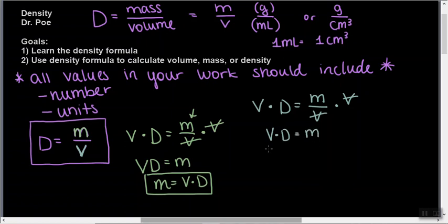And we get V times D equals M. The volume's not by itself yet. We've got this D next to it. So we can divide both sides by D, because it will cancel top to bottom. Cancel, cancel. Nothing over here cancels. And now, volume is alone equals mass over density.